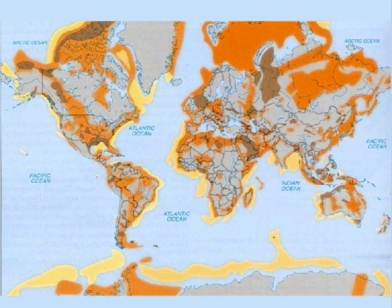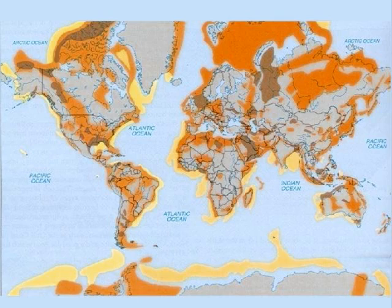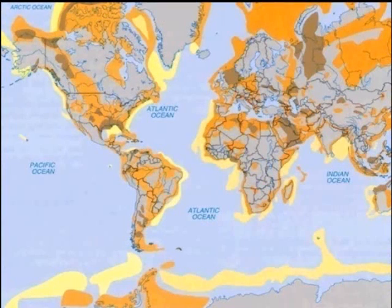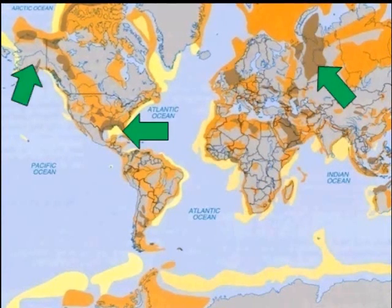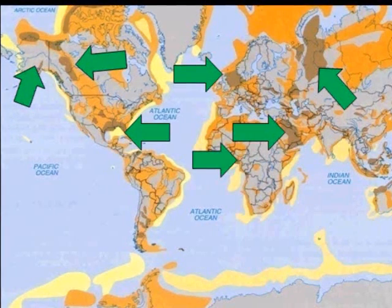Now, let's go back to the larger map and look at the sedimentary basins where some of the large oil fields have been found. Here you can see the location of sedimentary basins containing some of the world's largest oil reserves. These large oil fields are located here in Russia, in the Gulf of Mexico, Alaska, Canada, the North Sea, the Middle East, Africa, and Venezuela.